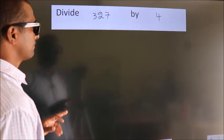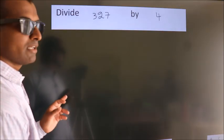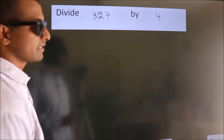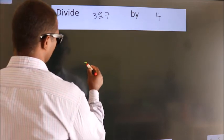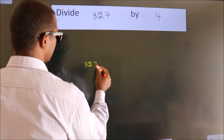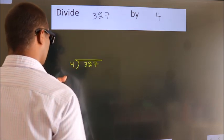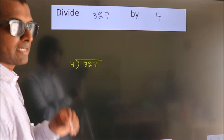Divide 327 by 4. To do this division, we should frame it in this way: 327 here, 4 here. This is your step 1.